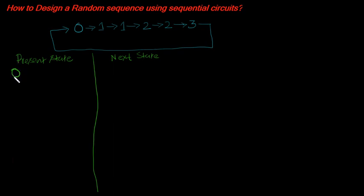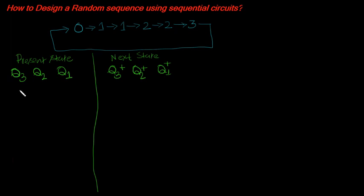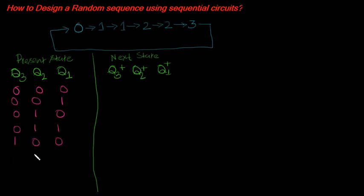Let me call the flip-flop outputs Q3, Q2, and Q1 — these represent the present state. The next state will be Q3+, Q2+, and Q1+. For the 3 flip-flops we have 8 possible states: 000, 001, 010, 011, 100, 101, 110, 111 — numbered 0 through 7. We have to design this particular problem using these 8 states.